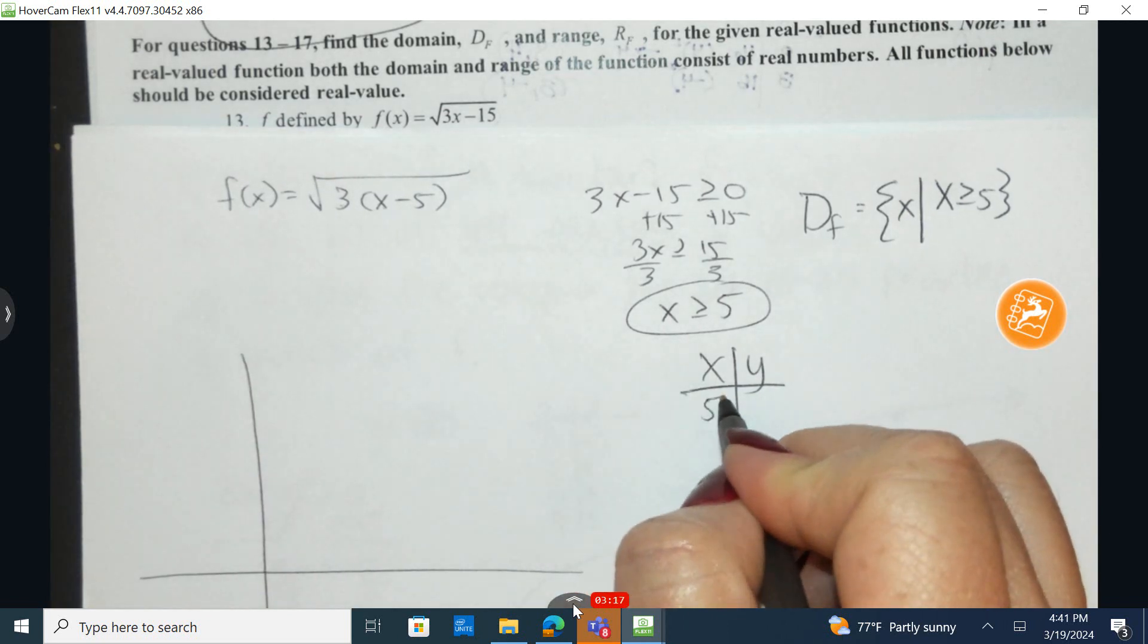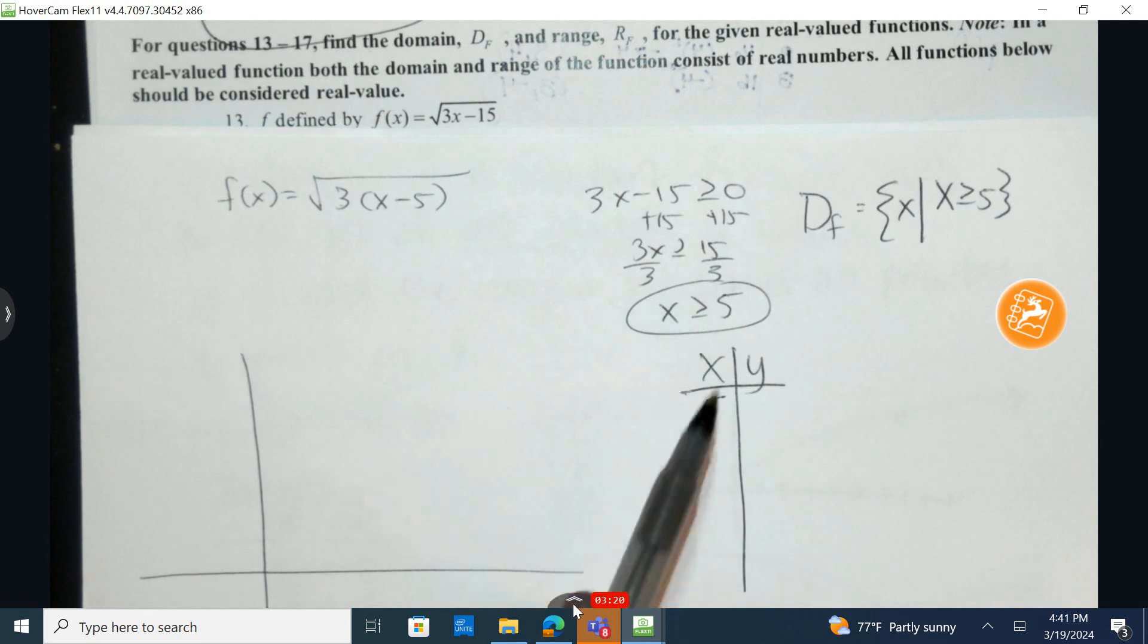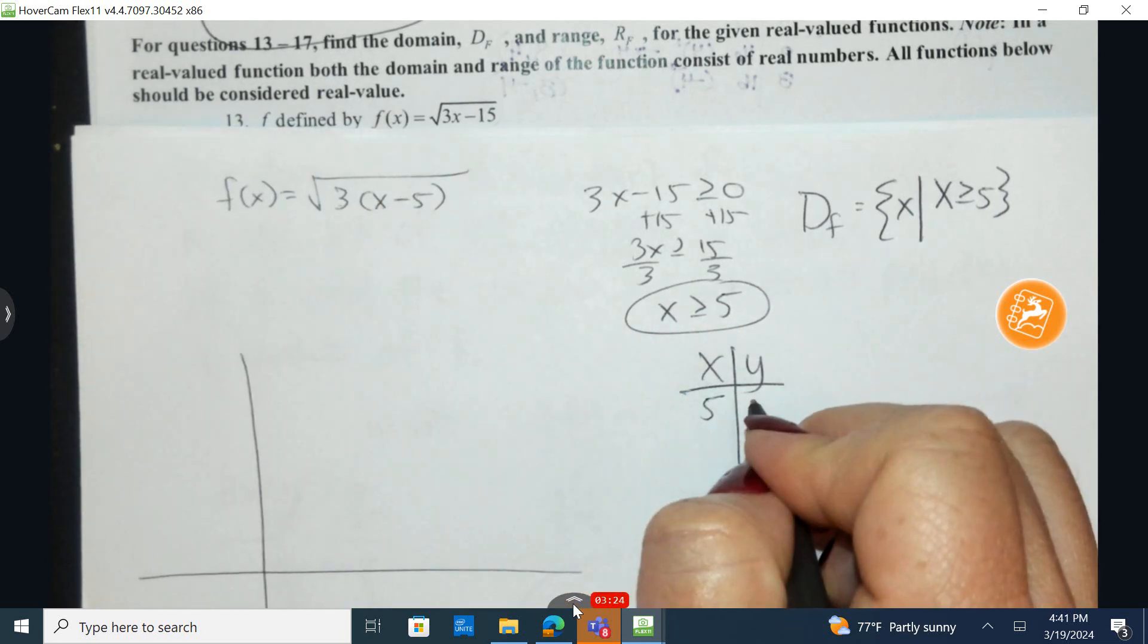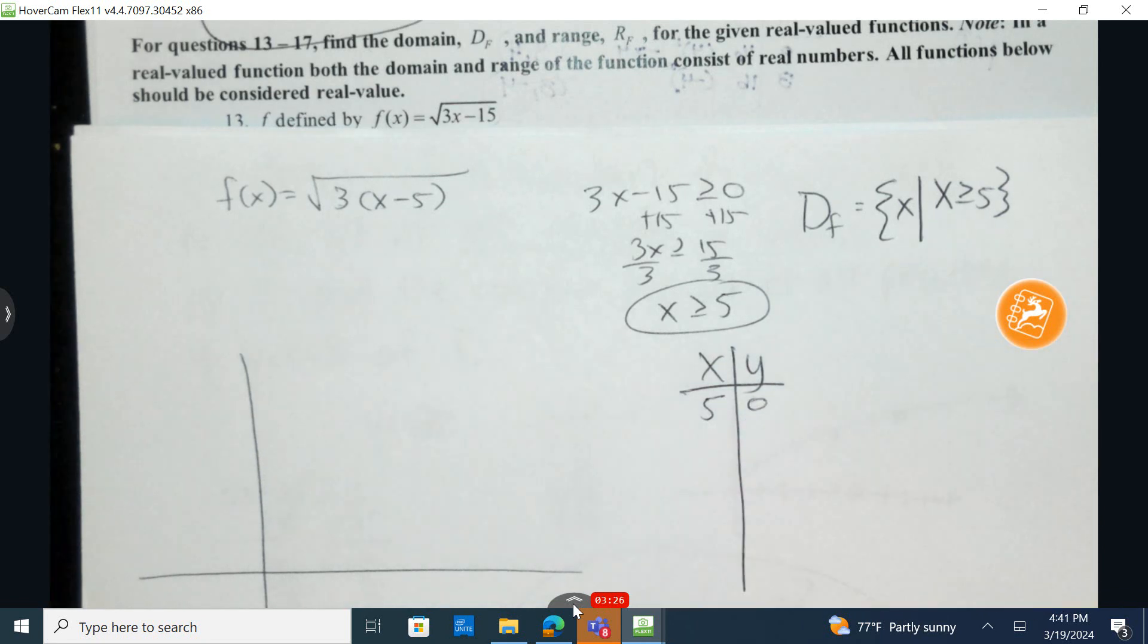Five is the smallest number that I can plug in. I plug in five, five minus five is zero, zero times three is zero, so square root of zero is zero. Simple enough.